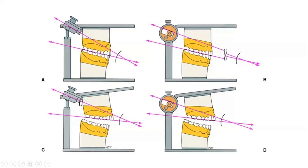In the arcon-type articulator, the condylar assembly and the maxillary arch remain in a constant relationship, which is very important in cases of full mouth fixed prosthesis where we need a perfect, constant relationship between the condylar guidance and the occlusal plane. That is the use and importance of the arcon articulator.